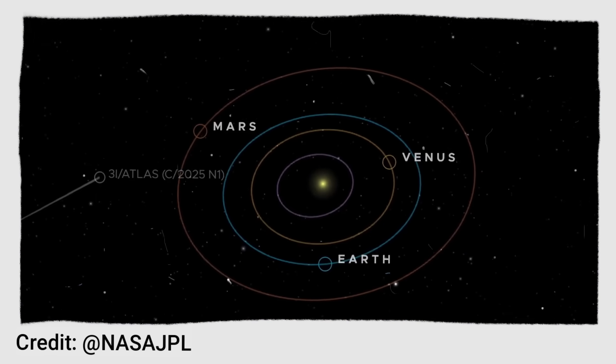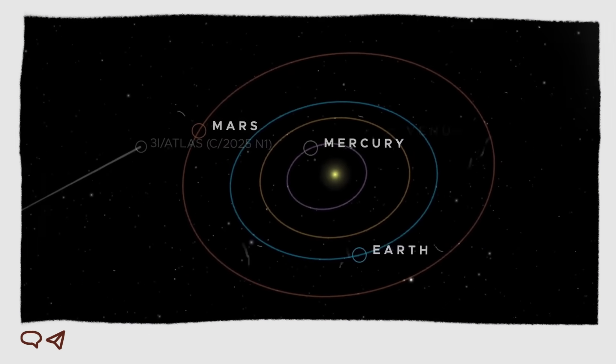Right now, a fleet of NASA spacecraft are turning their attention to an unusual object speeding through our solar system. Every so often, a picture comes back from space that just stops you in your tracks. And recently, we got one of those from Mars. It shows something that shouldn't be there. So let's get into it.